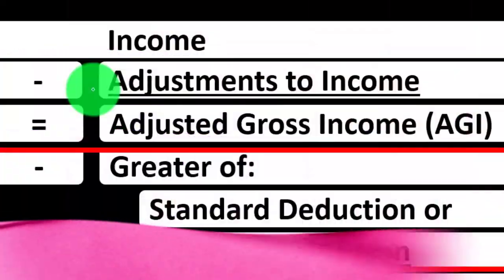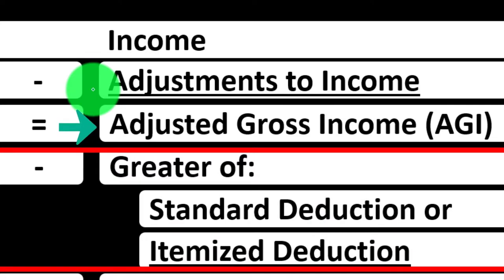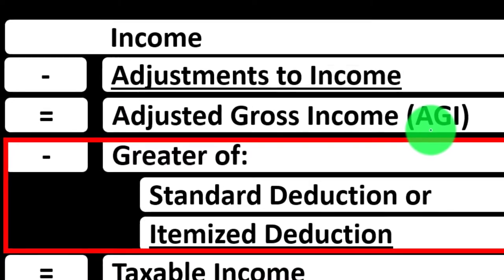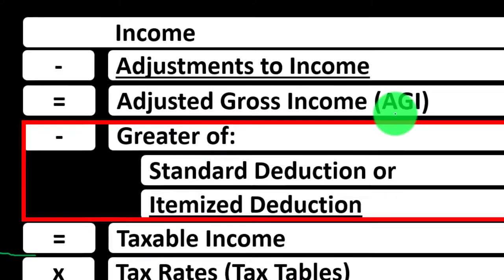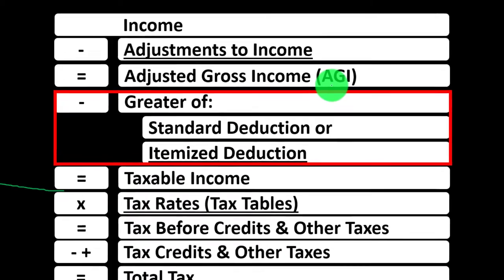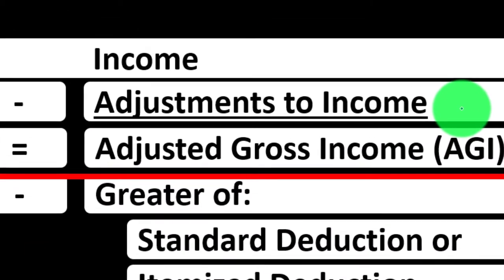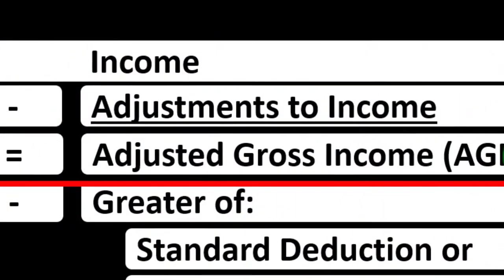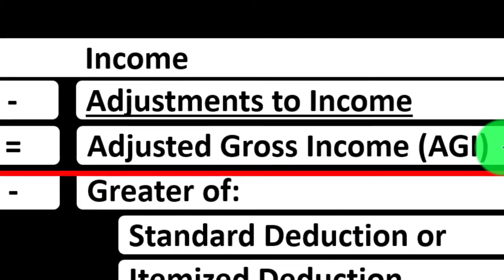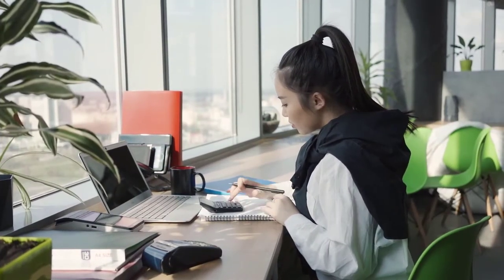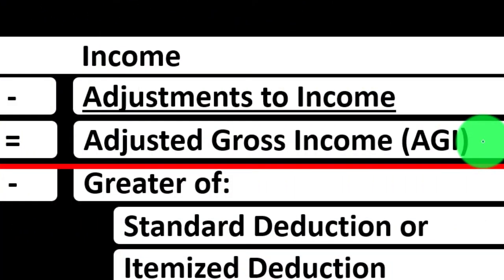So why would they call them adjustments to income? Because the adjusted gross income — the AGI — is often what is used when you think about income phase-outs for things like credits and deductions. These above-the-line deductions are going to have an impact on the AGI, which is typically the number used to calculate phase-outs on expenses and credits.